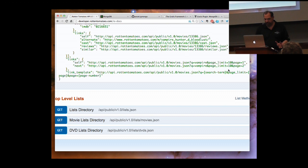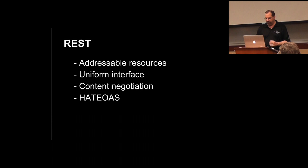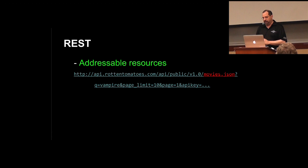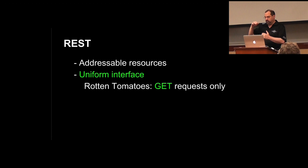Here are the four REST principles. Addressable resources have the form of a URL for each individual resource. Uniform interface — in this case we only have GET requests. Grails, starting in 2.3 and above, has actual mechanisms built in for GET, POST, PUT, and DELETE. There have been massive improvements in REST support in 2.3 and above. In this application I'm using 2.4, my first time using it.